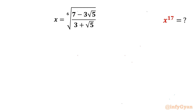Welcome back to Infigian friends. In today's video we are having another very challenging and interesting question from RadicalMaps. Here we are going to evaluate x power 17, if x is the 6th root of 7 minus 3√5 over 3 plus √5. So let's get started with our radicand.